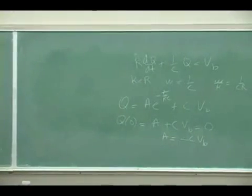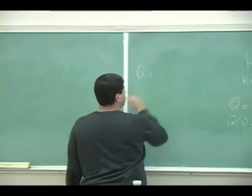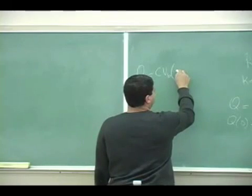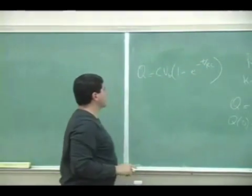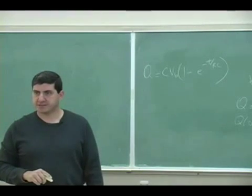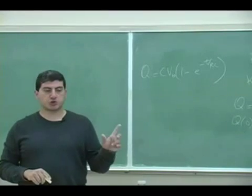Okay, so my final equation is going to be Q is going to equal—I can factor out the C VB—Q is going to equal C VB...